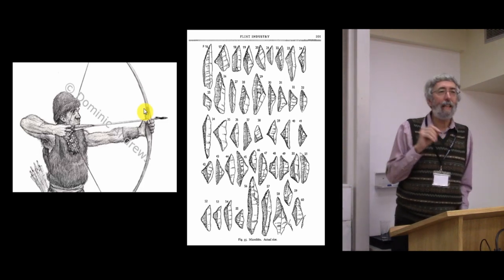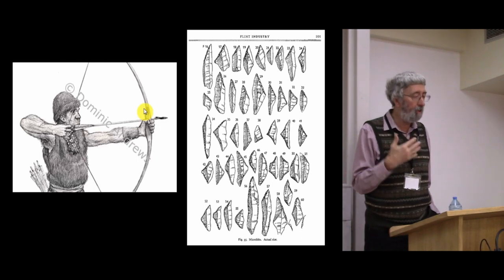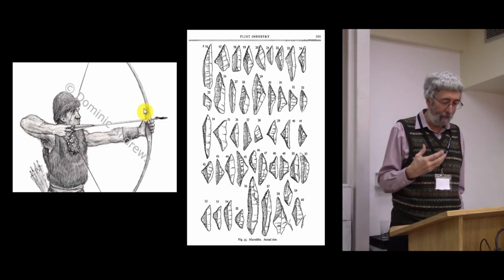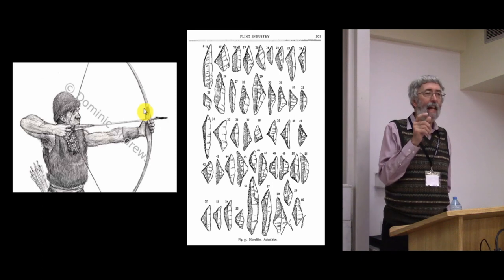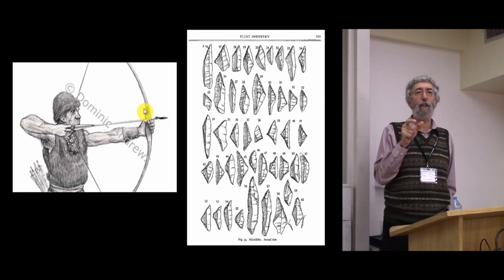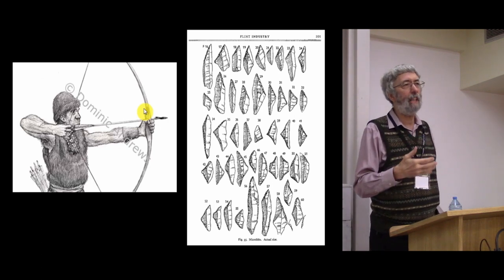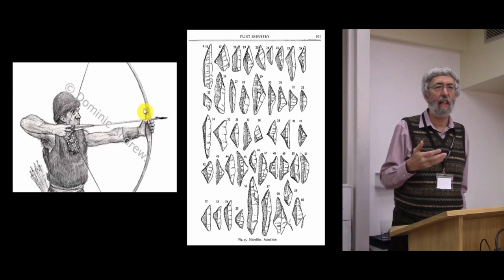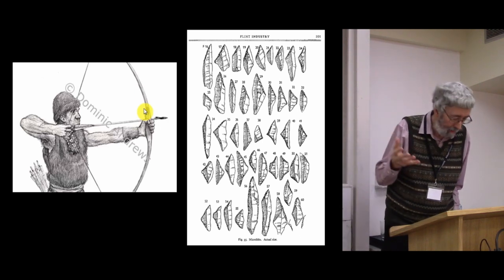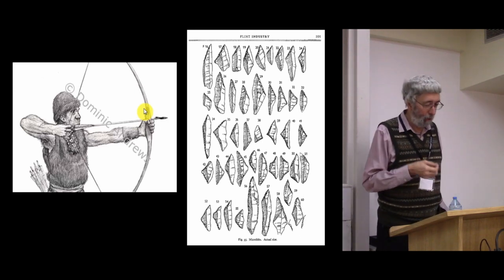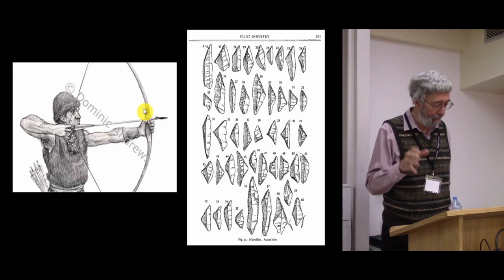There isn't really much in terms of a temporal sequence that is usually portrayed. The Mesolithic is usually seen as an ahistorical period in which the beginning and the end were really just the same — what Finlay called the 'boys and arrows' narrative.